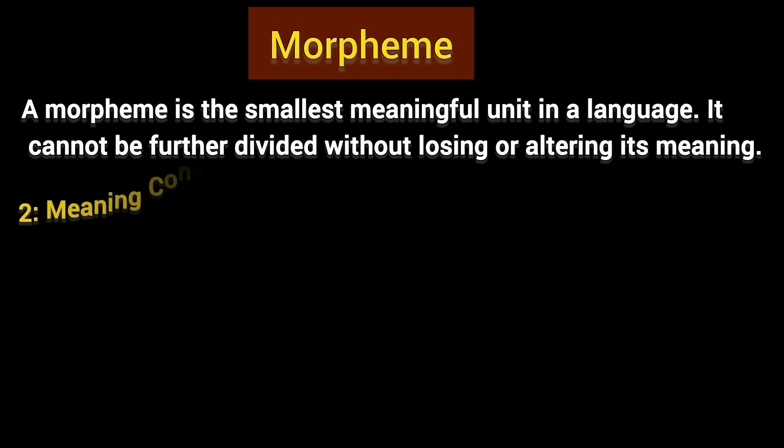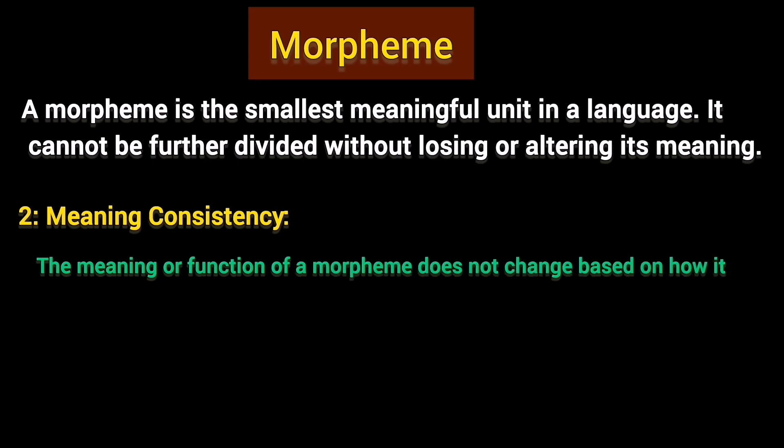The next characteristic is meaning consistency. The meaning or function of a morpheme does not change based on how it is pronounced or written. A morpheme carries a stable and recognizable meaning that doesn't change even when the word it appears in changes. For example, the morpheme showing plurality is sometimes pronounced 'iz' and sometimes 's', but however differently you pronounce it, it still refers to plurality.